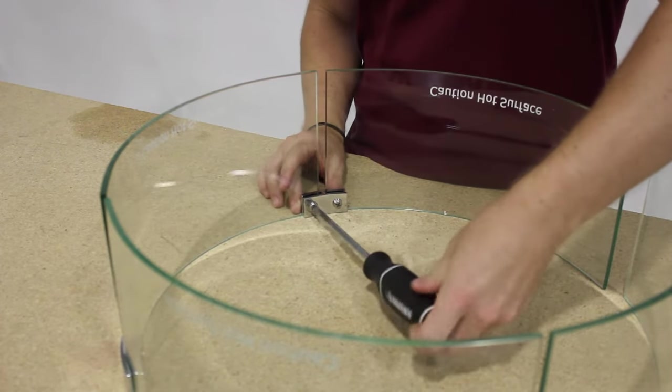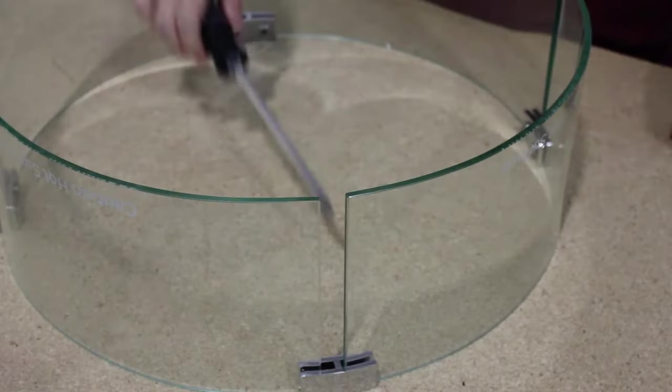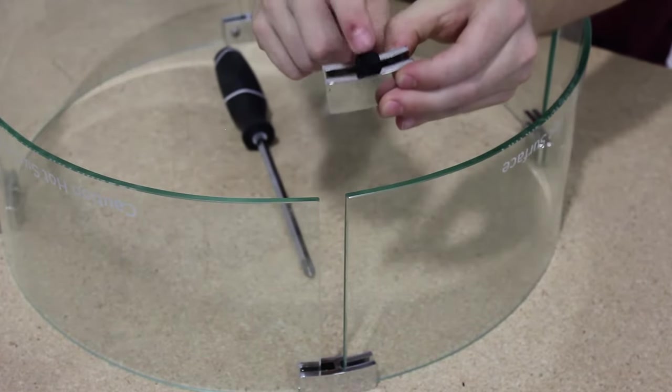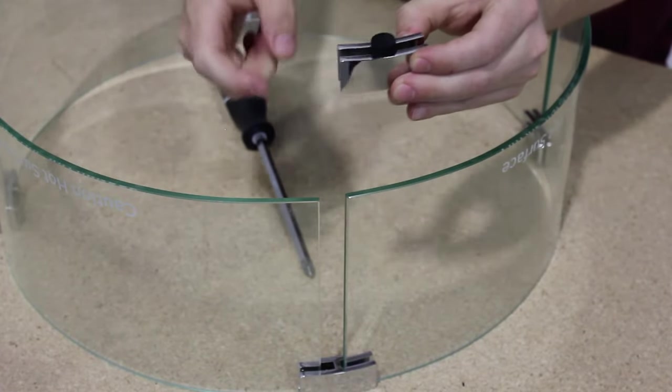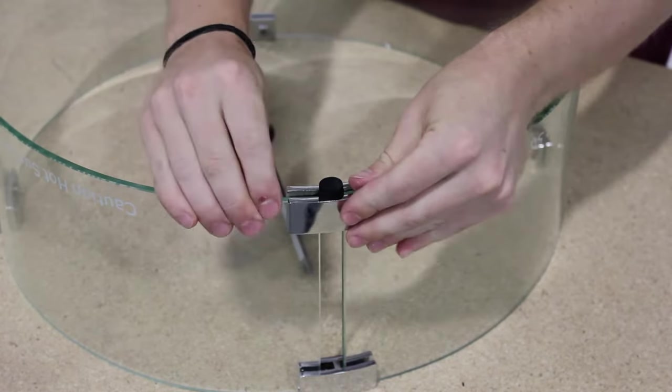Once you have all top connectors in place, you may start adding the bottom connectors. These are the ones with the rubber feet. These feet are held in place by the glass panels pushing up against them.